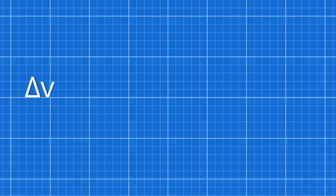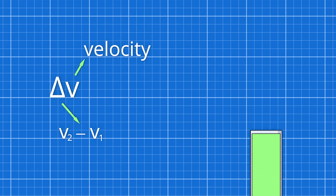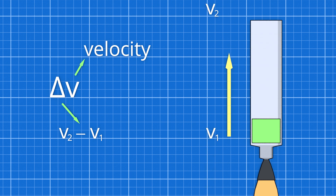I actually have a video on that already which you can check out, but to sum it up: V stands for velocity, and the delta is used in maths to indicate a difference between two values — hence the Greek capital D. In this case, the speed before and after a burn is meant, so knowing the delta V of your rocket you can exactly tell how much you can accelerate your payload.